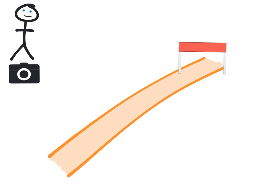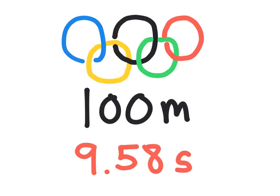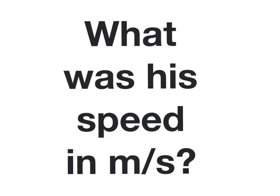One time, the really fast runner was in a running race. When the gun went off, he ran. He ended up finishing the 100 meter race in 9.58 seconds. What was his speed in meters per second?